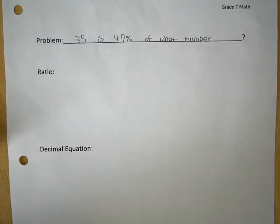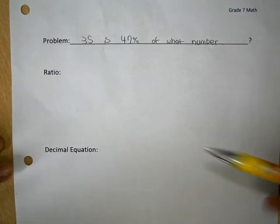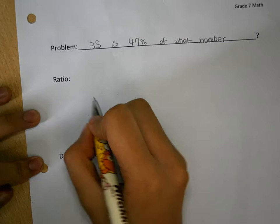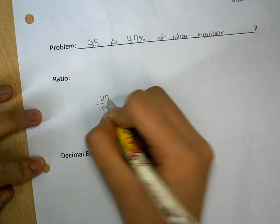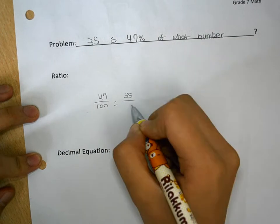First, it's a good idea to estimate so you would know that the answer would be larger than 35. To set up a ratio, it would be 47 over 100 which is equal to 35 over n.